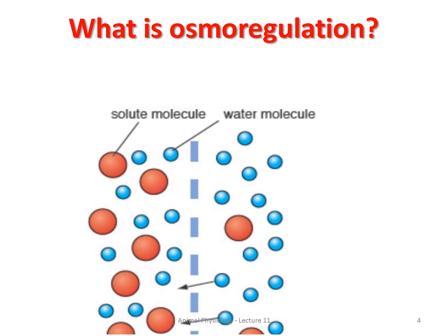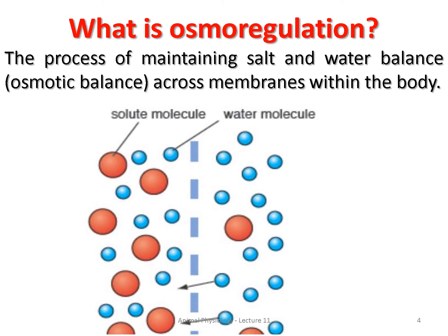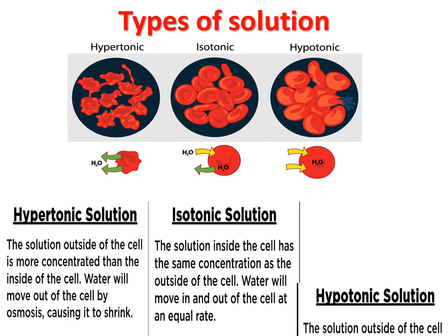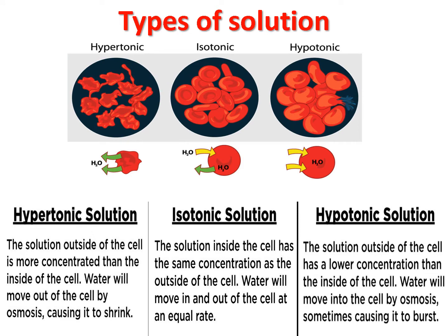Osmoregulation is the process of maintaining salt and water balance across the membranes within the body. There are three types of solutions: hypertonic, isotonic, and hypotonic. In a hypertonic solution, the solution outside the cell is more concentrated, so water moves out of the cell and the cell shrinks. In an isotonic solution, concentration inside and outside is equal, so there is no change. In a hypotonic solution, concentration is more inside the cell, so the cell swells and sometimes bursts.